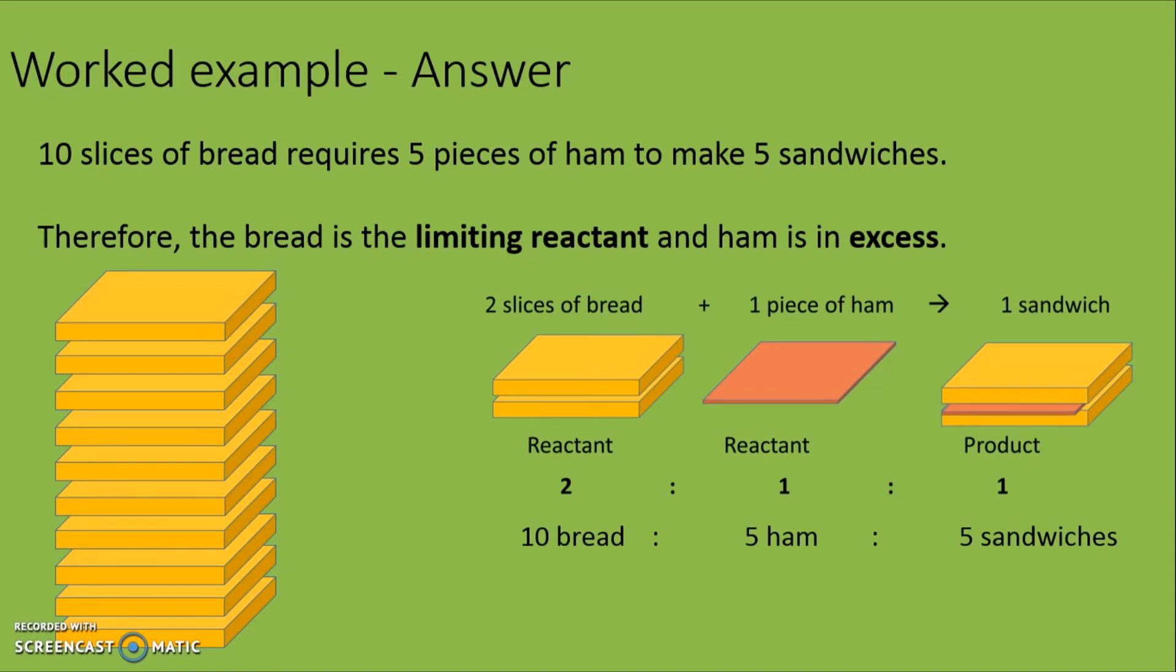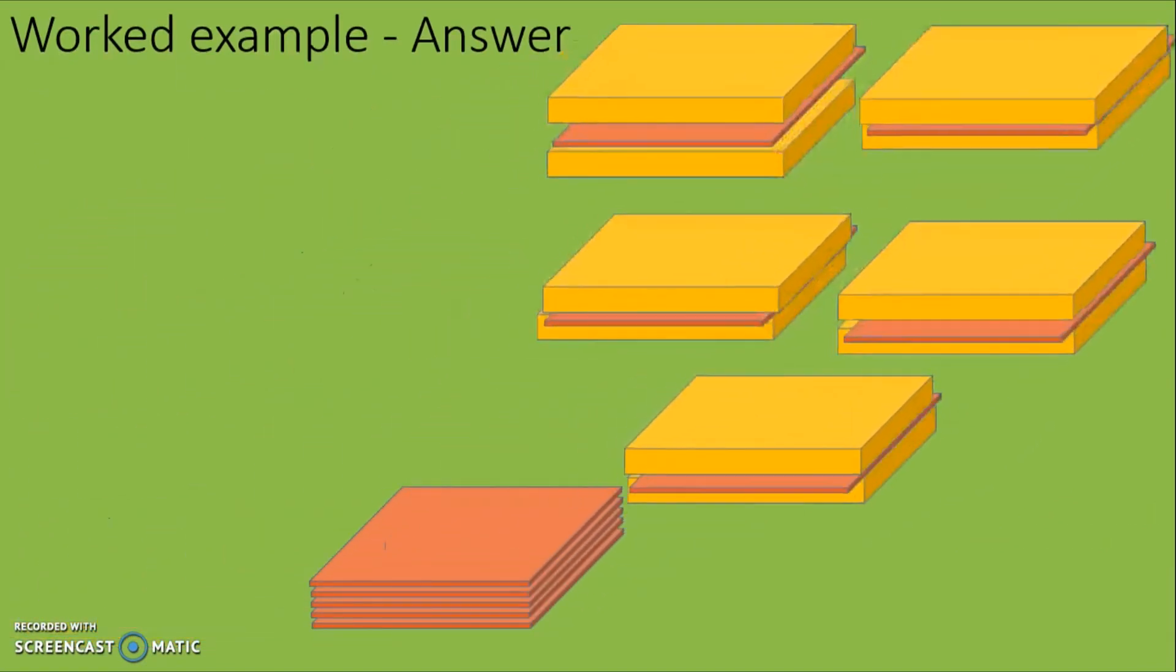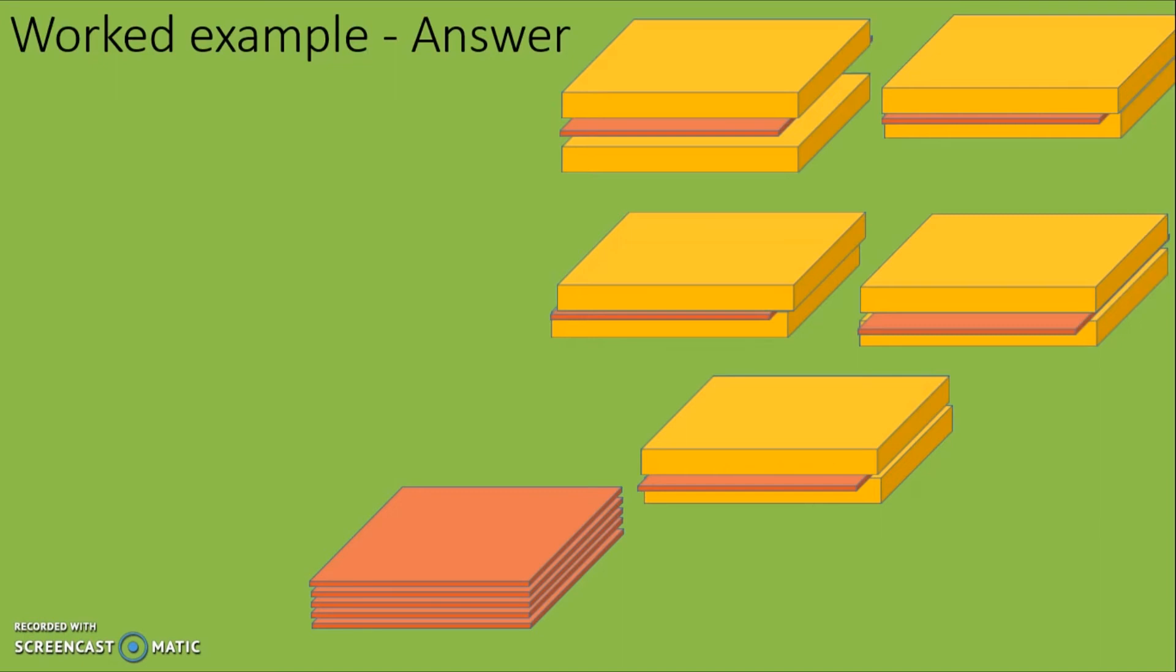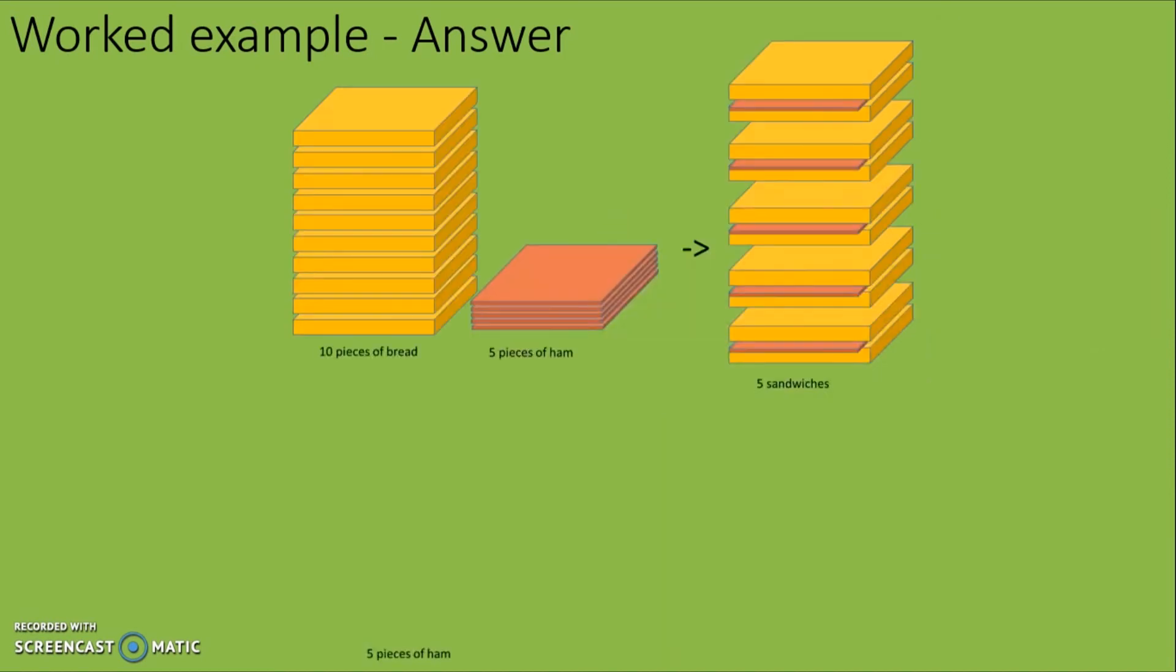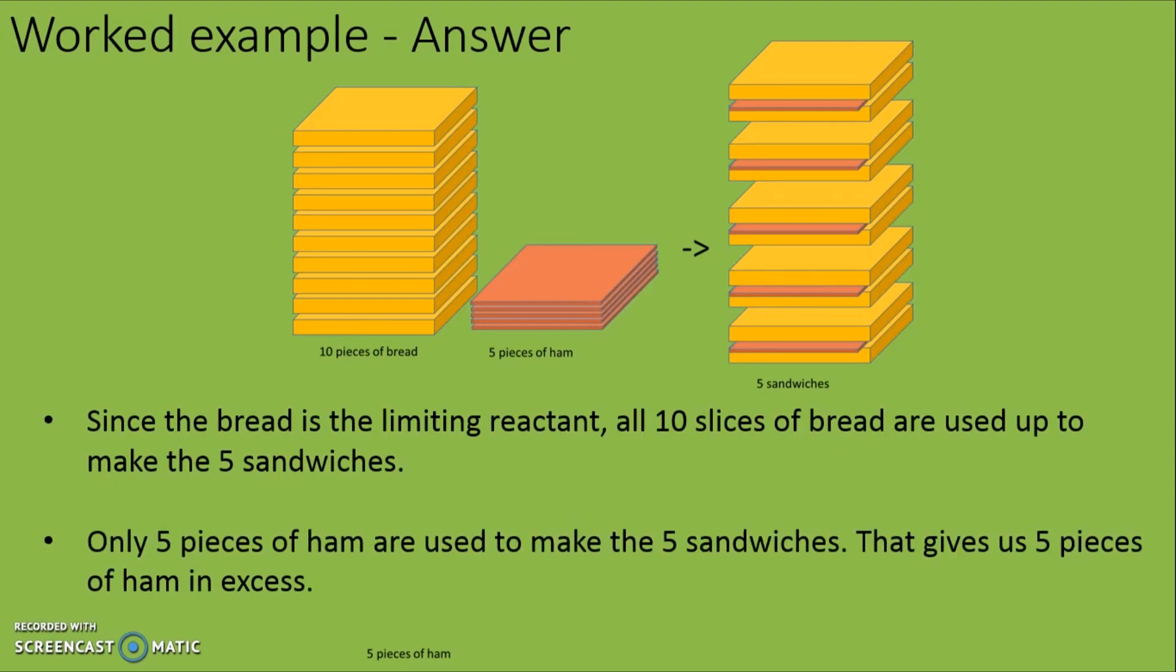However, putting the two ingredients together, Johnny will not be able to make 10 sandwiches as there will be a shortage of bread. And as such, he will only be able to make 5 sandwiches. That will leave him with 5 pieces of ham as leftovers. Since the bread is the limiting reactant, all 10 slices of bread are used up to make the 5 sandwiches. Only 5 pieces of ham are used to make the 5 sandwiches, giving us 5 pieces of ham in excess.